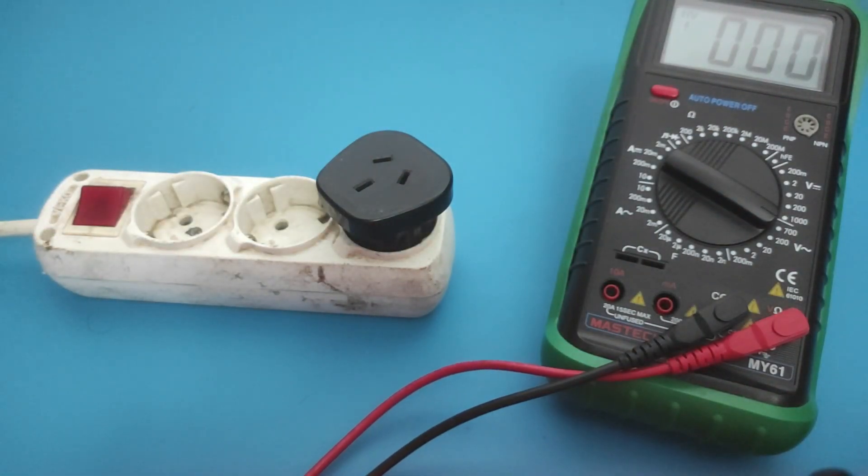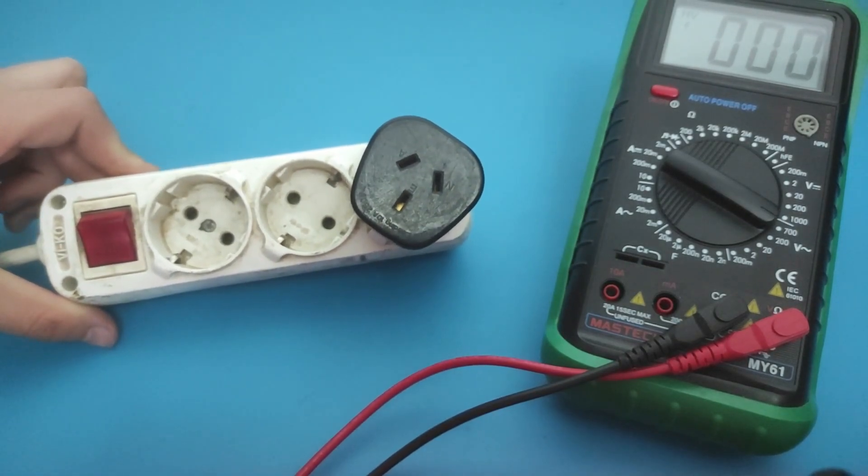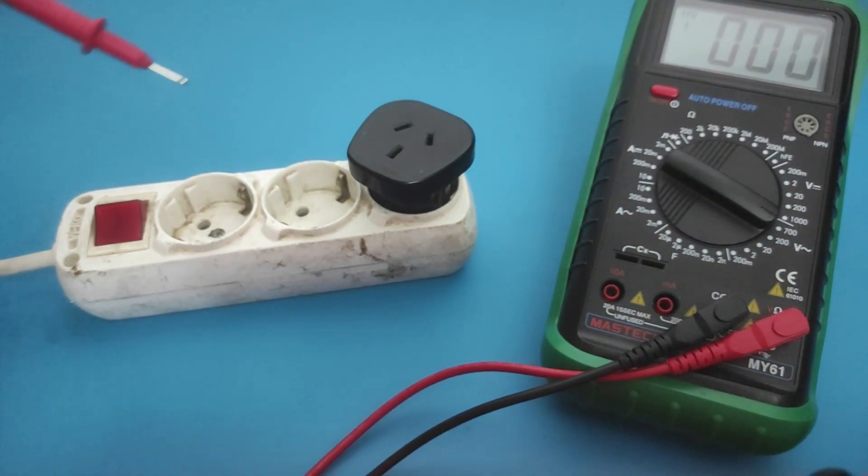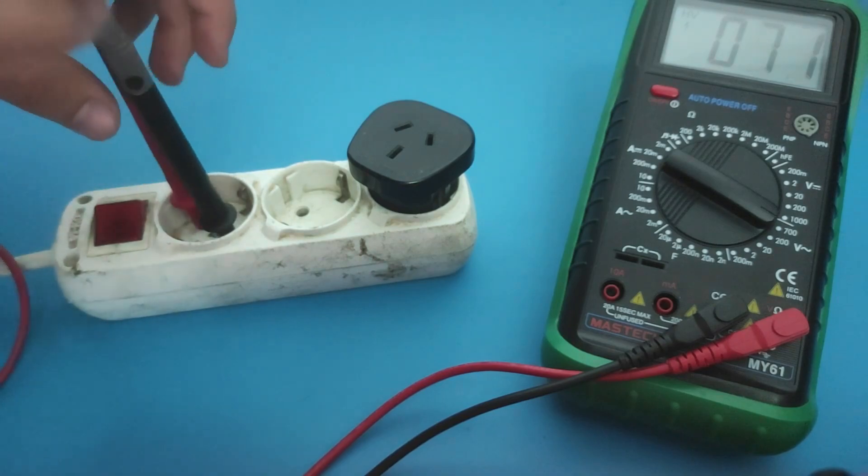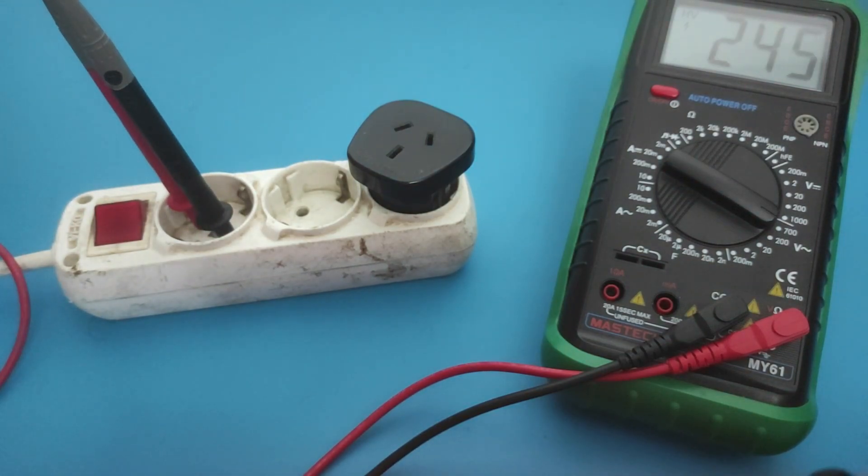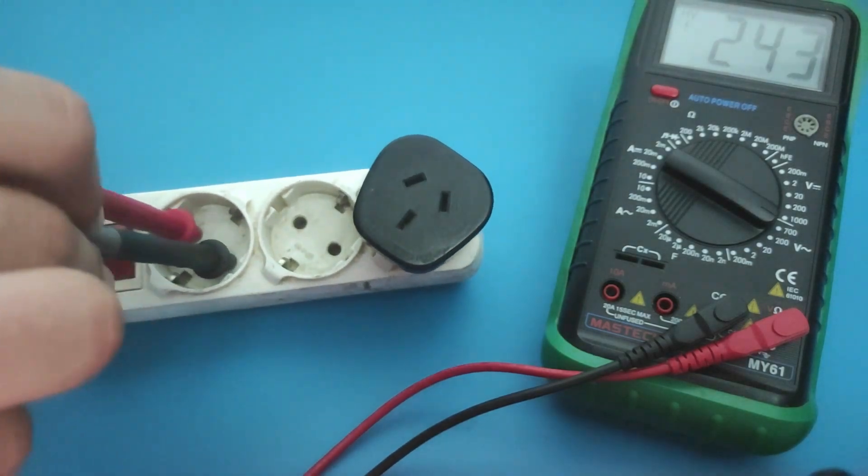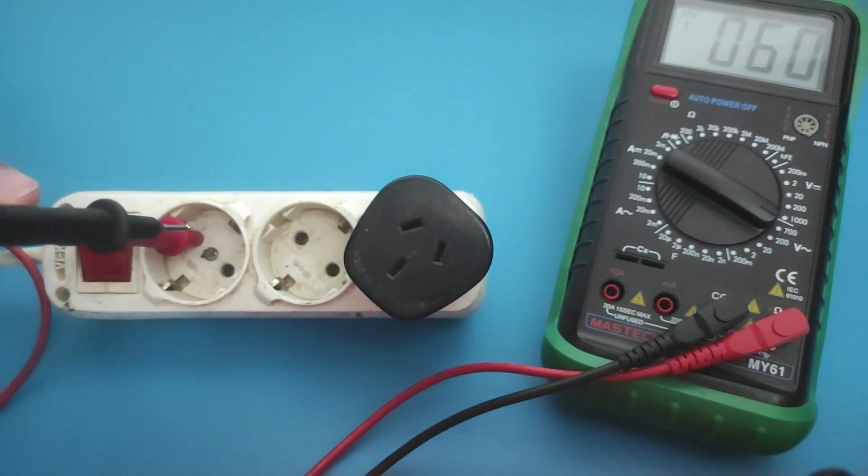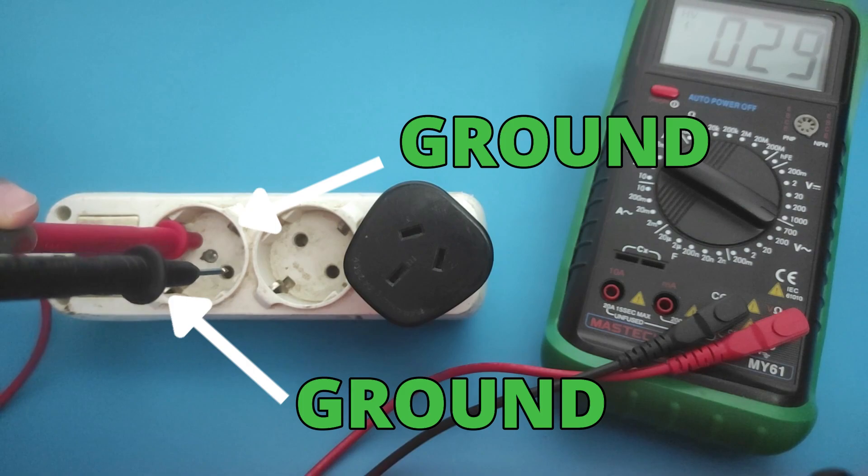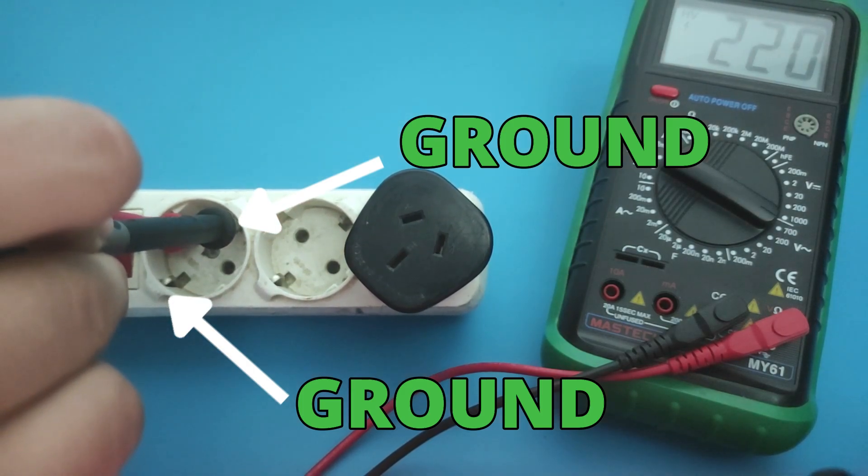Let's see how to identify the wires on the socket. First I will show you on a European socket. Just insert the probes into the two holes—one is neutral and the other is hot. We need to recognize where the hot wire is. Now remove one probe and touch the ground, and we found the hole where the hot wire is.